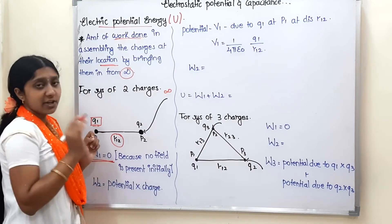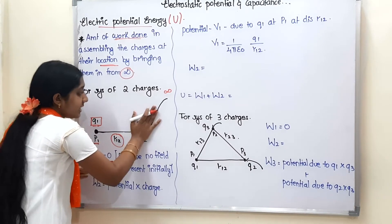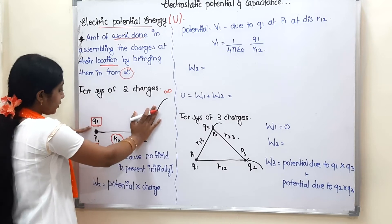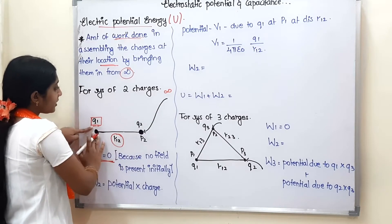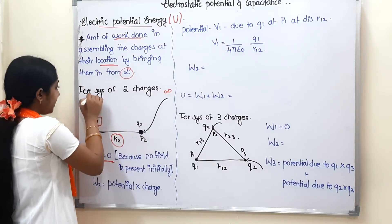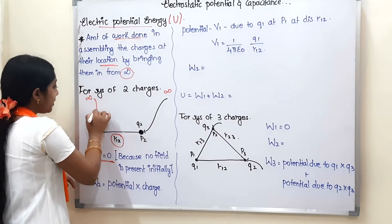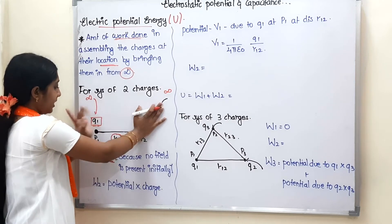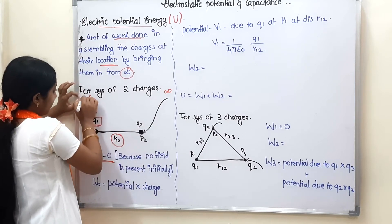When we bring the first charge Q1 from infinity to P1, since there is no other charge present, there is no force acting on it. Therefore, the work done W1 is zero. For that first charge, no external field or force exists.